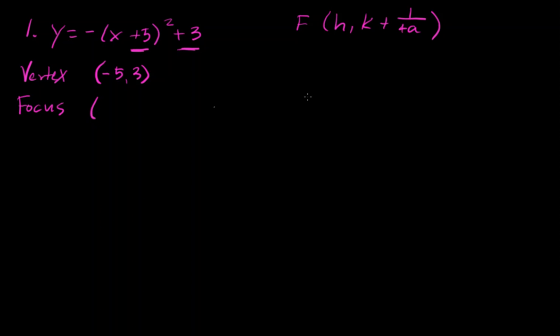So let's go ahead and identify h, k, and a. Those are all the things that we need from the equation. So h is negative 5, k is 3, and you get that from the vertex because it's h, k.